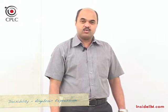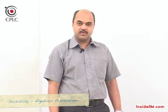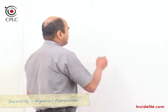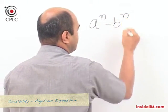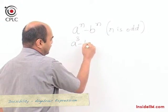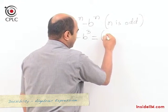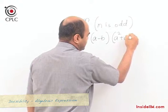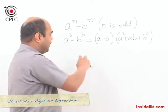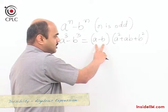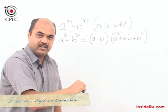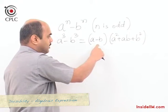In this chapter on divisibility, we now look at algebraic expressions. Consider an expression of the type aⁿ − bⁿ where n is odd. Taking the example a³ − b³, this simplifies as (a − b)(a² + ab + b²). From this, a³ − b³ is always divisible by (a − b). Generalizing: any expression aⁿ − bⁿ where n is odd is always divisible by (a − b).